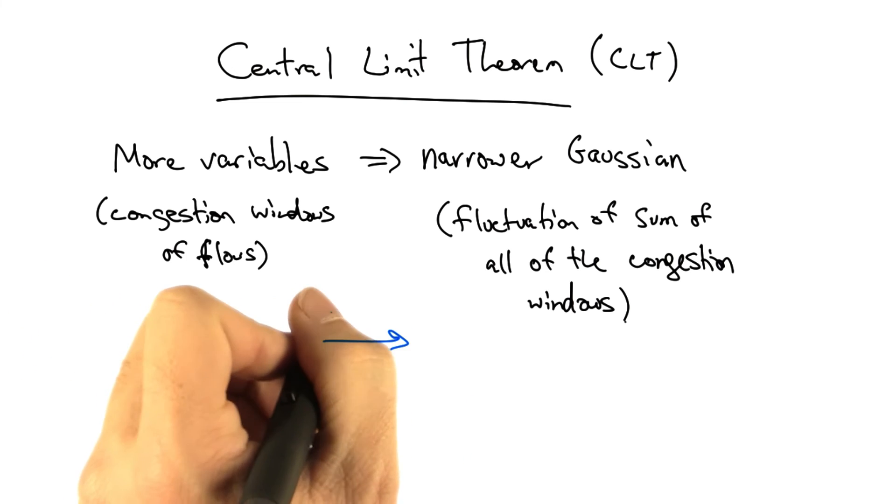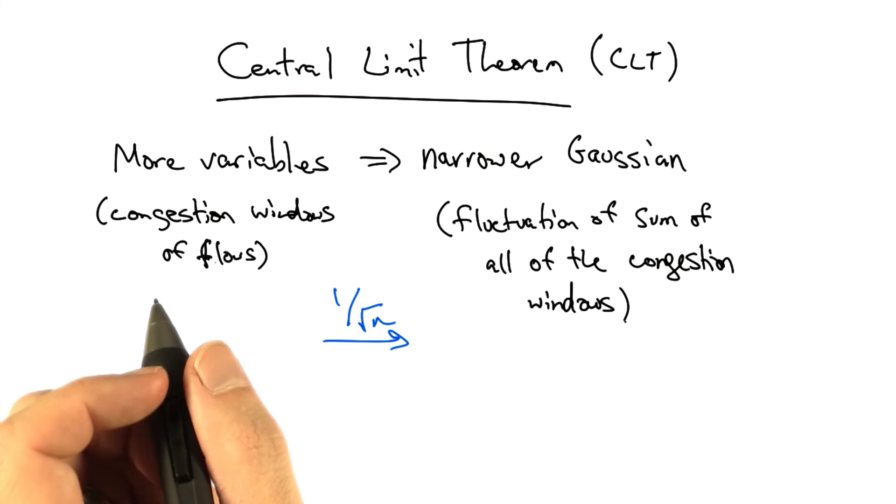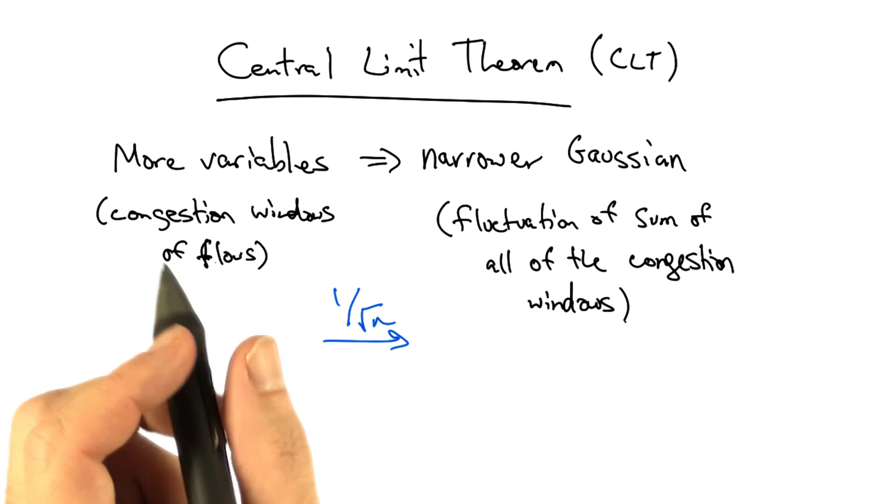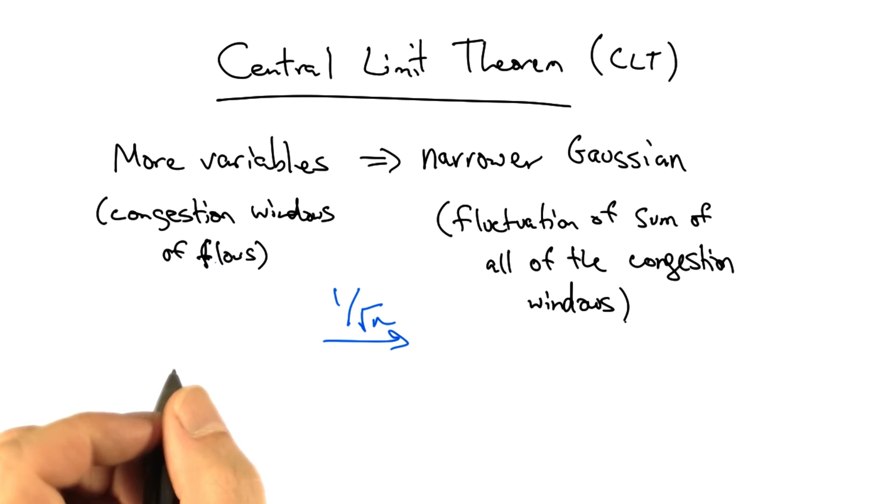In fact, the width decreases as 1 over root n, where n is the number of unique congestion windows of flows that we have.